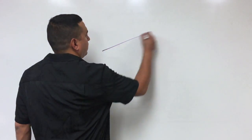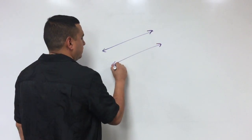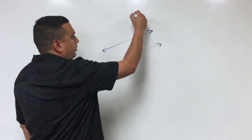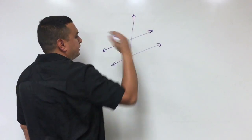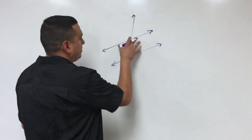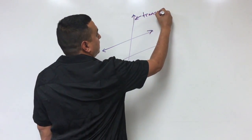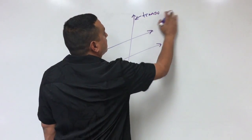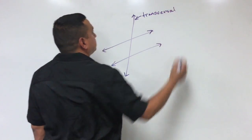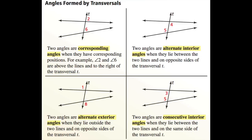Next, we have five vocabulary words. A transversal is a line that intersects two or more coplanar lines at different points. So you have two lines, and then a third line that crosses and intersects both of those other two lines. That third crossing line is called the transversal.